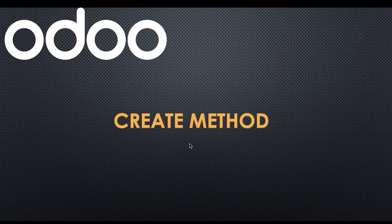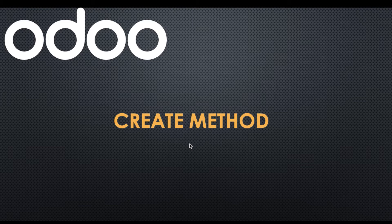In this discussion we'll look at the create method, which is one of the useful ORM methods. We'll also see the api.model decorator and in which situation we need to override this method. If you missed the previous discussion related to an overview of ORM methods, please check the link given in the description. If you don't know why the create method is important, let's create one student profile and try to override that method.